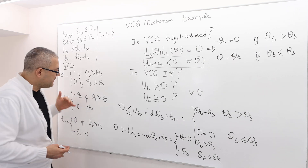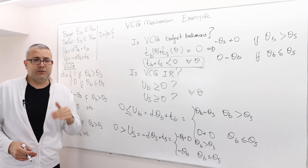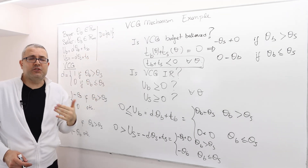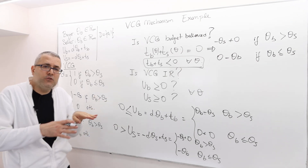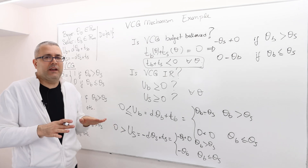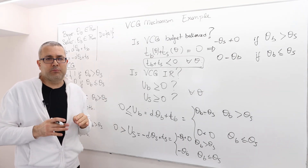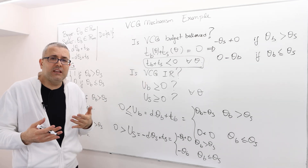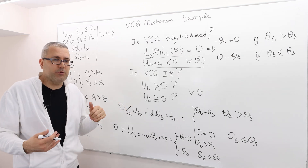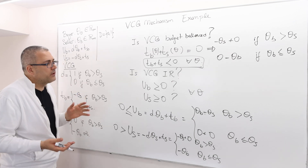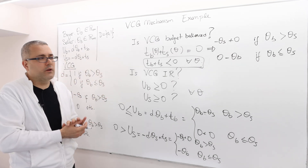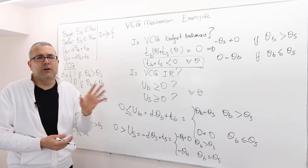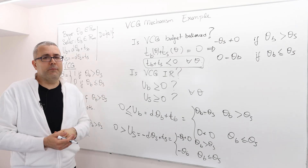The bottom line is: the VCG mechanism, although it is strategy-proof, violates budget balancedness and also violates individual rationality. The buyer has incentive to participate, but the seller will hate this mechanism because there's no way to make positive profit — the seller will always make negative profit. Individual rationality requires always making non-negative profit. So this is an awkward mechanism in this framework. But as argued earlier, the VCG mechanism is always strategy-proof. Let's prove it, which is coming up in the next episode.